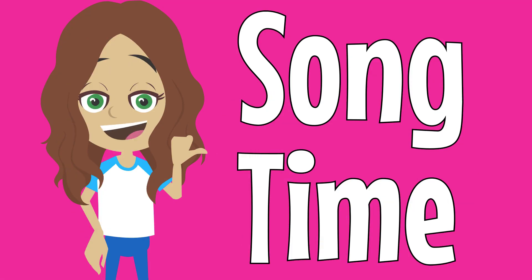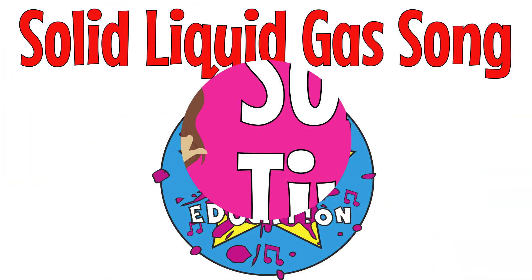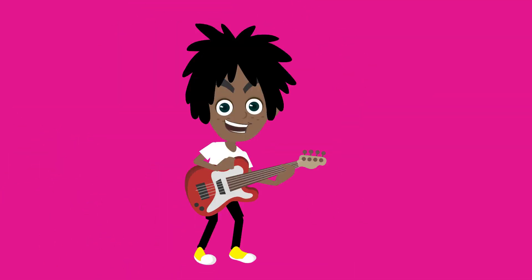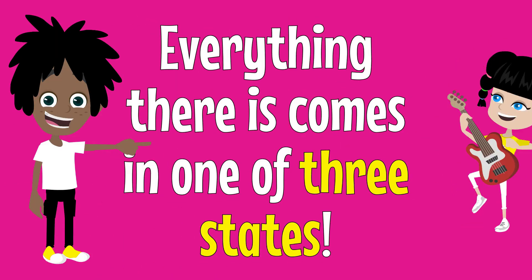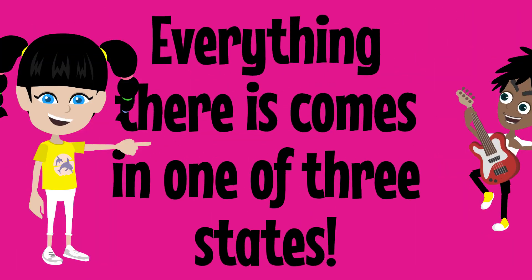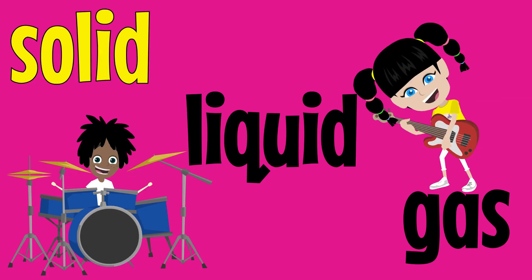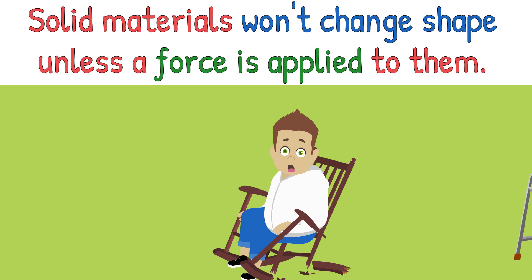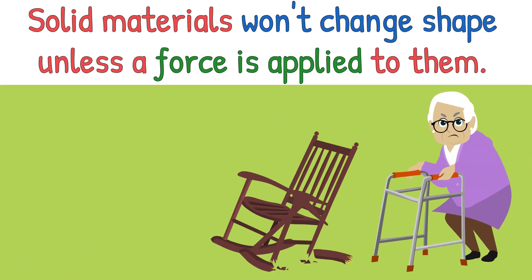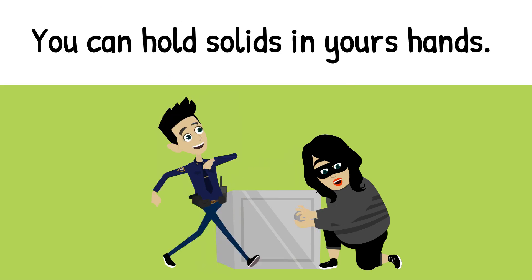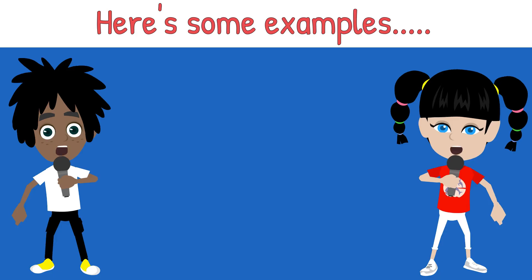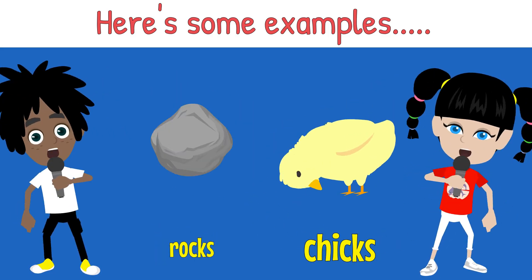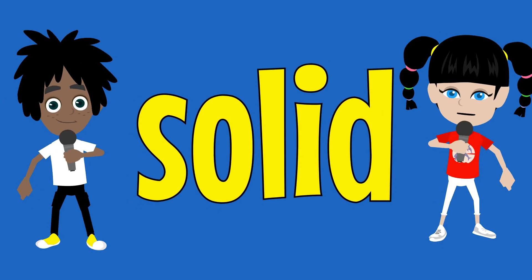Here's a song to help you remember what you've just learnt. Everything there is comes in one of three states — solid, liquid or gas. Solid materials won't change shape unless a force is applied to them. Solids always take up the same amount of space. You can hold solids in your hands. Here's some examples: trees are solid, bees are solid, bricks are solid, chicks are solid, rocks are solid, socks are solid.